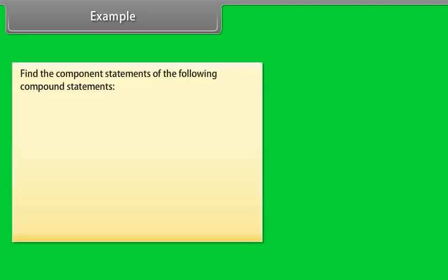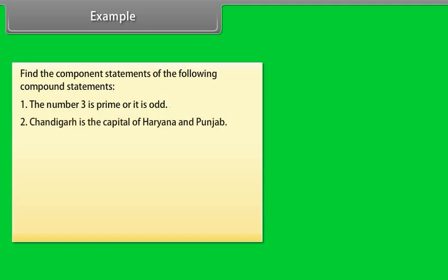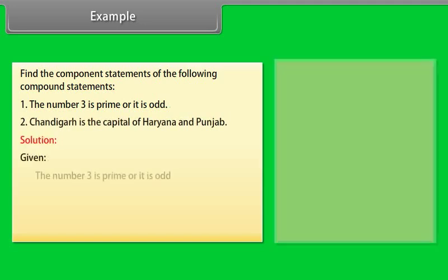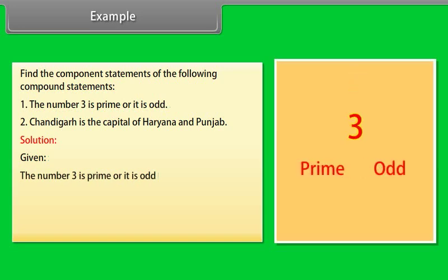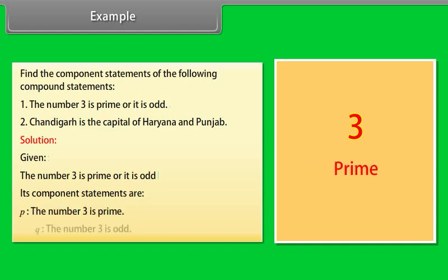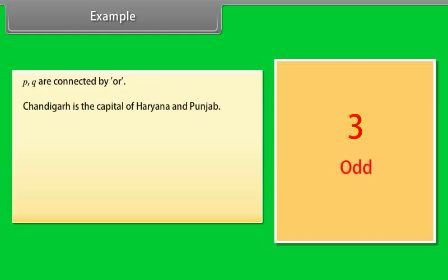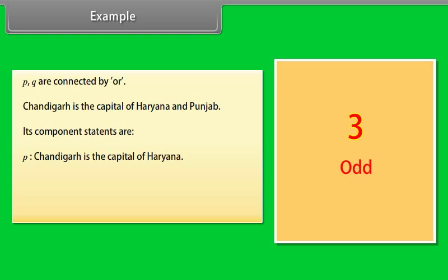Example: Find the component statements of the following compound statements. (1) 'The number 3 is prime or it is odd.' Component statements: P — the number 3 is prime; Q — number 3 is odd. P and Q are connected by OR. (2) 'Chandigarh is the capital of Haryana and Punjab.' Component statements: P — Chandigarh is the capital of Haryana; Q — Chandigarh is the capital of Punjab. P and Q are connected by AND.